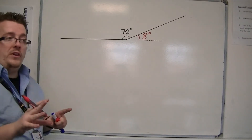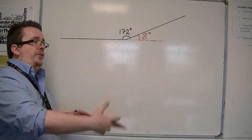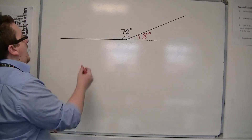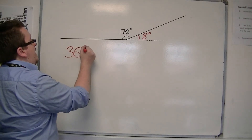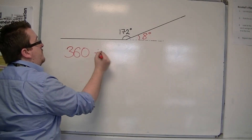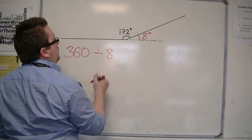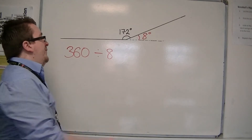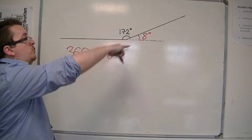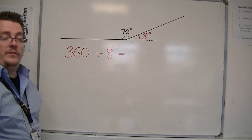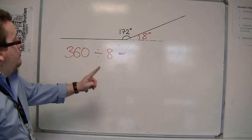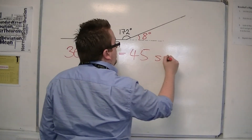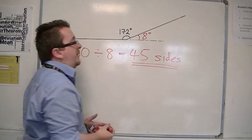We know also that all of the exterior angles add up to 360 degrees. And if this is a regular shape, what I need to do is divide that by the 8 degrees, because each one of them will be 8 degrees as I go around the shape. That will tell me how many sides the shape has. 360 divided by 8 is 45, so this shape must have 45 sides.